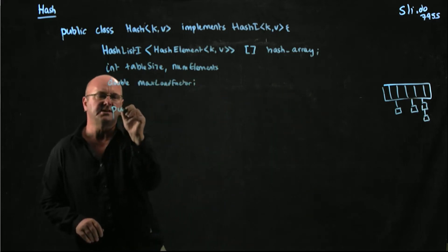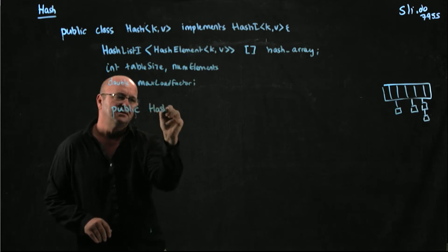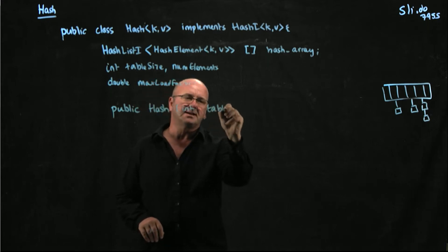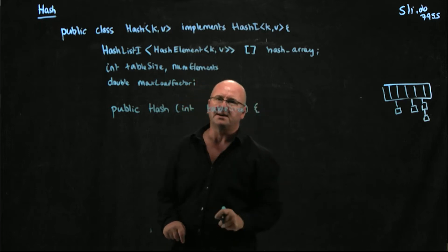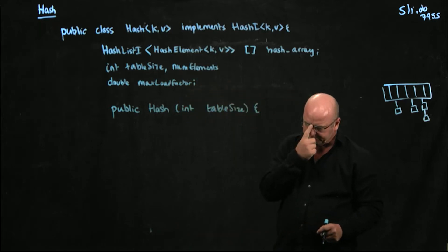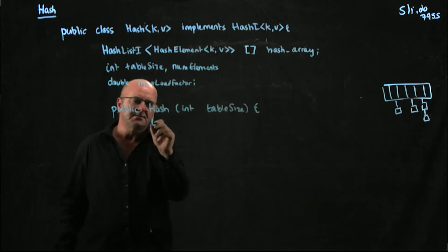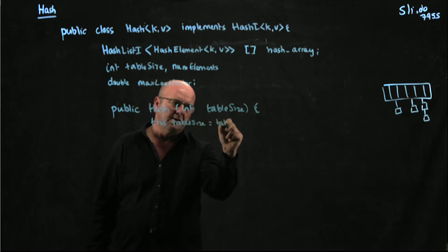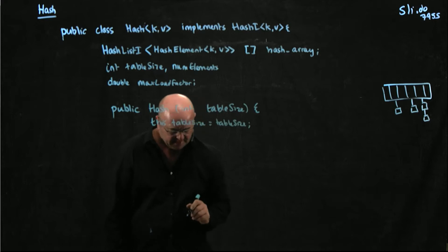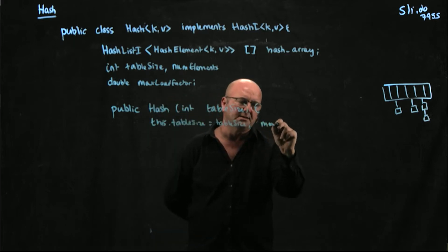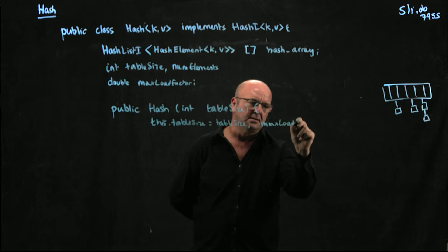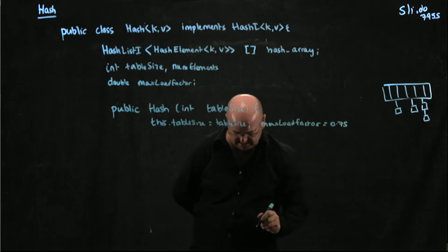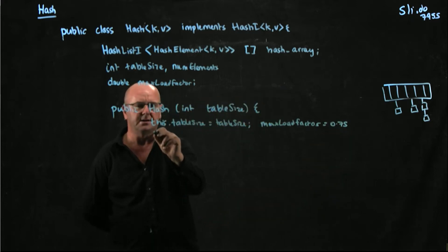And then we have our constructor. So here's our public hash constructor. And our constructor takes the table size that we'd like to start out with. So we just make sure we remember the table size. Let's set our max load factor. And let's initiate our number of elements.